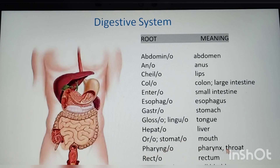More digestive system root words: pharyngeo — pharynx/throat; recto — rectum; cholecysto — gallbladder.